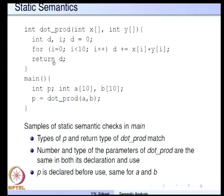In the main program we have two arrays a and b of size 10 each, and we call the dot product function with these two arrays as parameters — the sum is taken in p. The types of p and the return type of the dot product function should match. P is assigned a value returned by dot product, and p's type is integer, so the return value of dot product is also of integer type — these two match and there is no error.